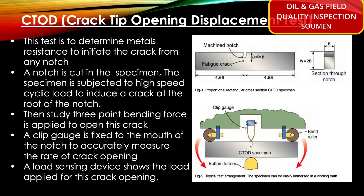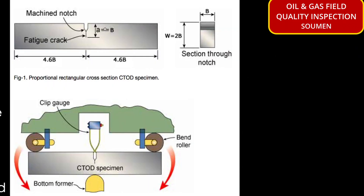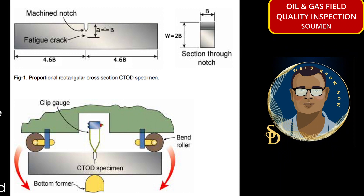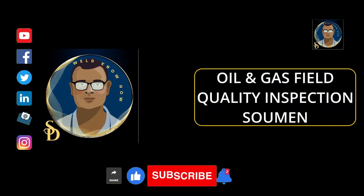CTOD — the full name is Crack Tip Opening Displacement test. This test is used to determine a metal's resistance to initiating a crack from any notch. A notch is cut in the specimen, and the specimen is subjected to high-speed cyclic loading to induce a crack at the root of the notch. Then a three-point bending force is applied to open the crack. A clip gauge is fixed to the mouth of the notch to accurately measure the rate of crack opening, and a load-sensing device shows the load applied for this crack opening.